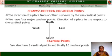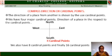Compass Direction or Cardinal Points. The direction of a place from another is shown by the use of cardinal points. We have four major cardinal points: North, South, East, and West. These are the four major cardinal points.